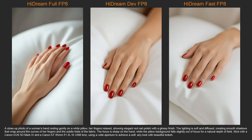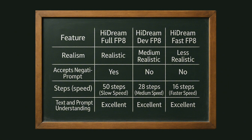I asked for a hand, and for this seed, the dev version generated a more accurate hand. In conclusion, it depends on what you want to generate. The advantage of the full model is that it can create more realistic images and accepts negative prompts, but takes more time because it needs 50 steps. On the other hand, the dev and fast versions are faster but don't accept negative prompts. So if I had to choose, I would say for realism use the full version, for illustration you can get away with the dev version, and for some illustrations I even got better results than with the full version. But overall, the full version is pretty good.